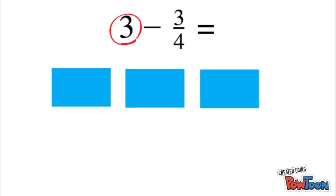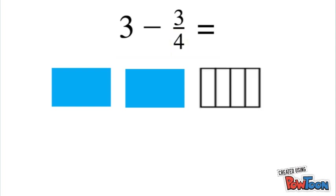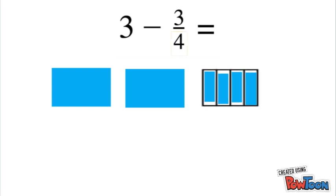First we'll represent the three wholes. Now we see that we don't have any fourths that we can take away, so we're gonna have to take one of our wholes and turn it into 4/4, which is equivalent to a whole.